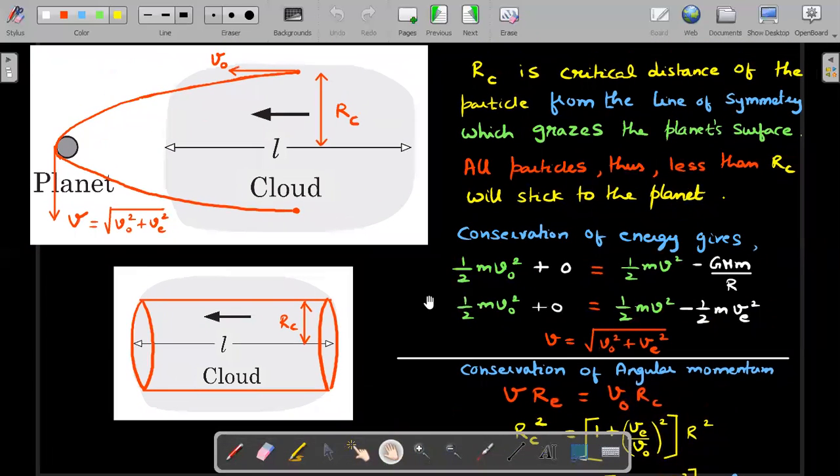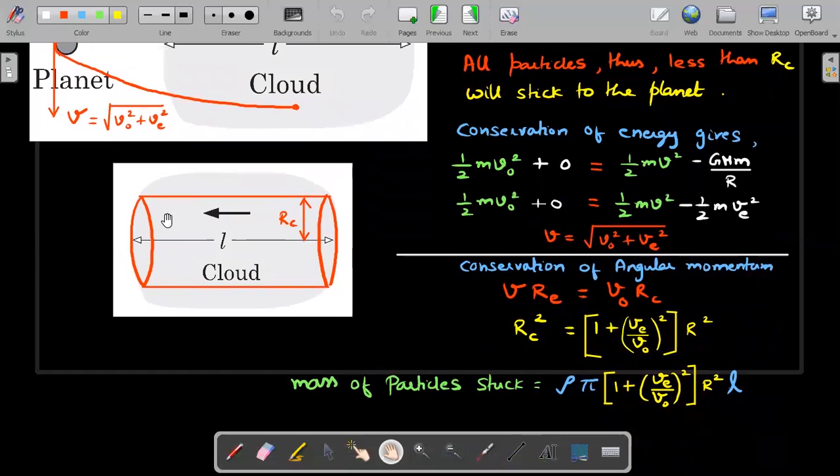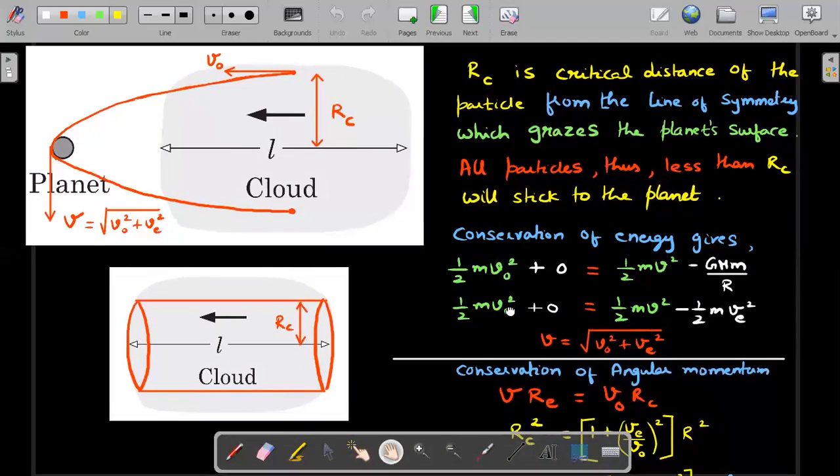Conservation of angular momentum, which is nothing but MVR and M gets cancelled on both sides for the dust particle. The V into capital R at this particular place should be V0 into RC, both are at 90 degrees to each other. So I'll substitute the value of V I got from conservation of energy here, and then I'll be able to get the RC square, which is the critical distance as expected. The mass of the particles that get stuck within this particular cylinder would be density into volume of the cylinder, which is pi RC square into L where I'll substitute the value of RC square in this manner to get the answer given in the textbook. So this is what the solution is all about. In this we have used pure physics equations and we didn't even use the fact that this is actually a hyperbolic curve, which is what we'll do in the next problem.